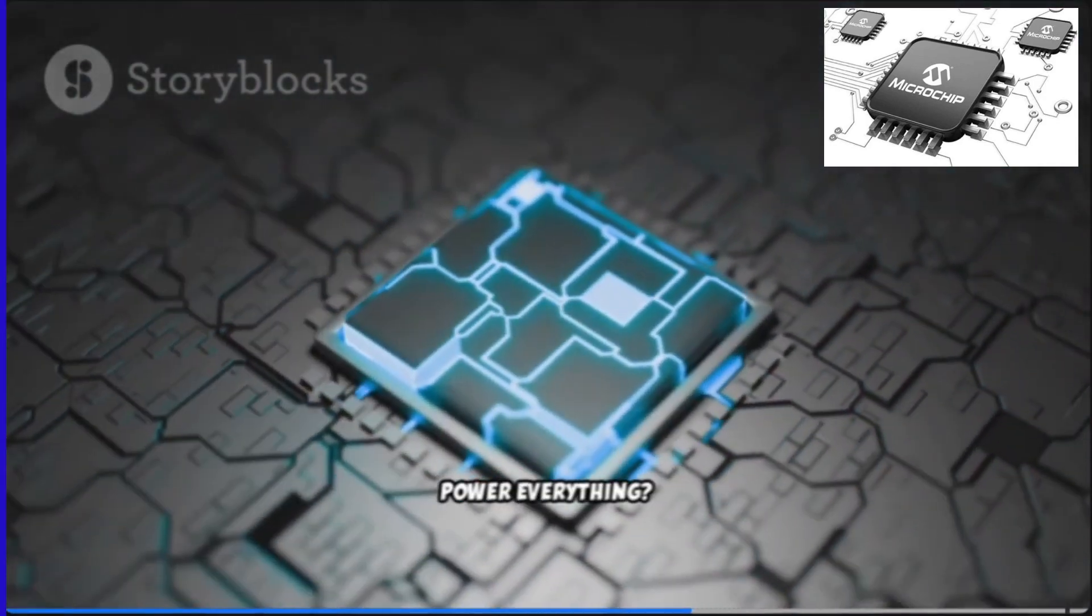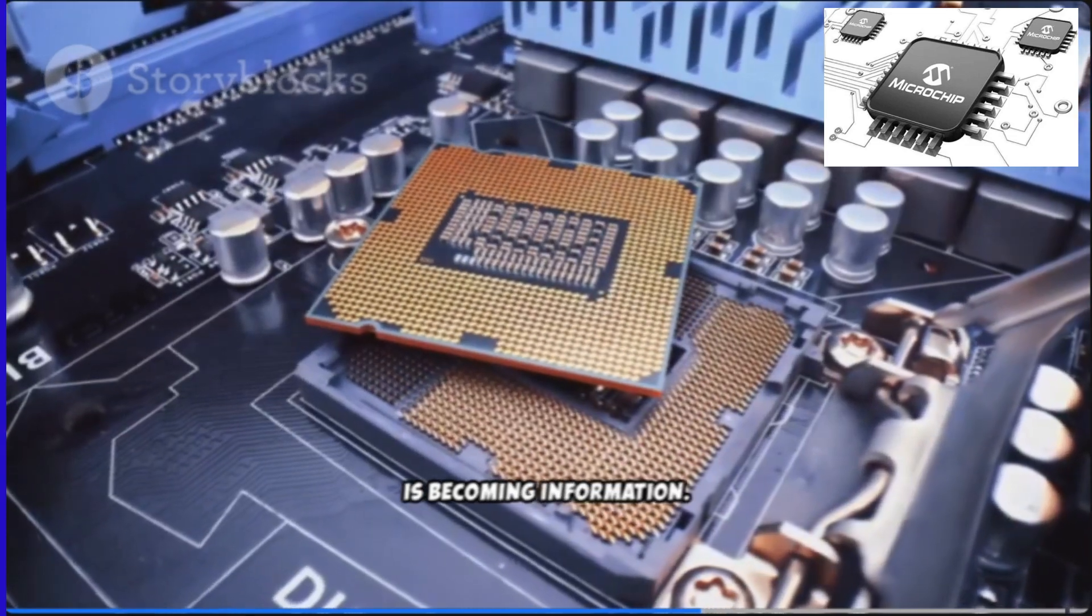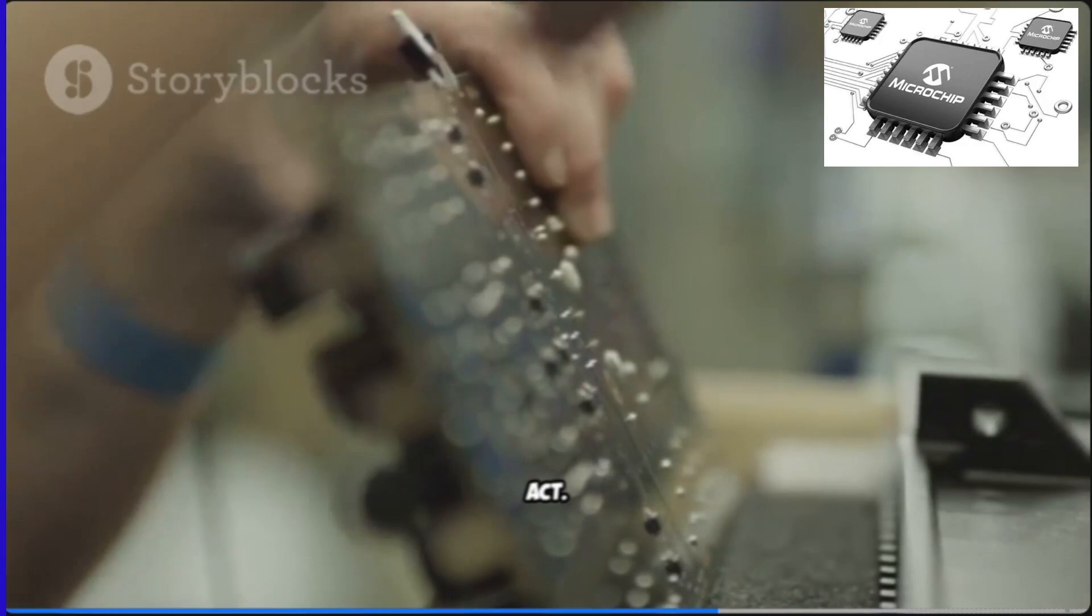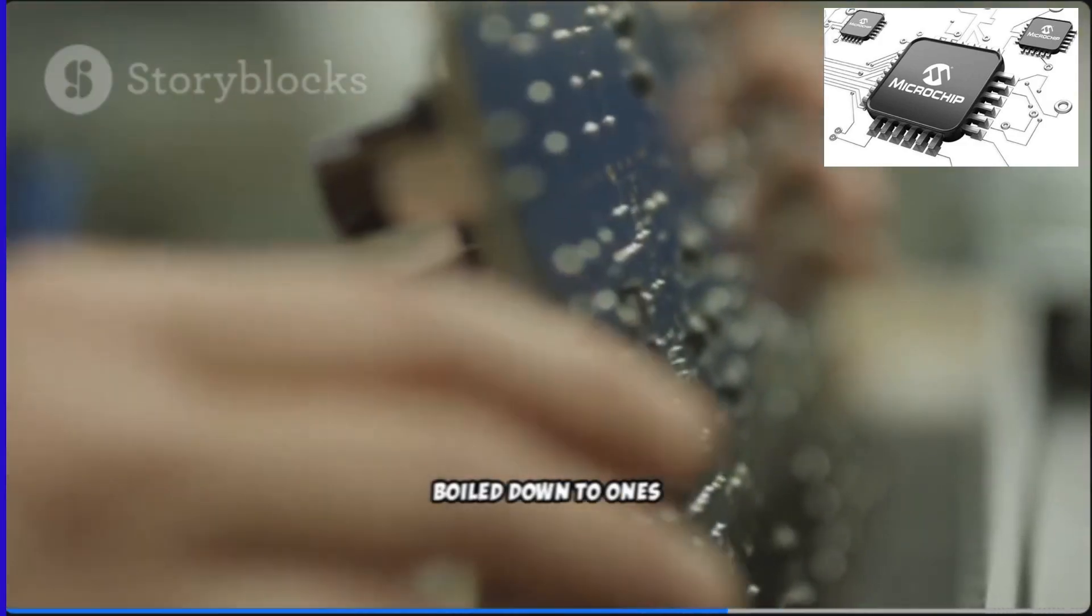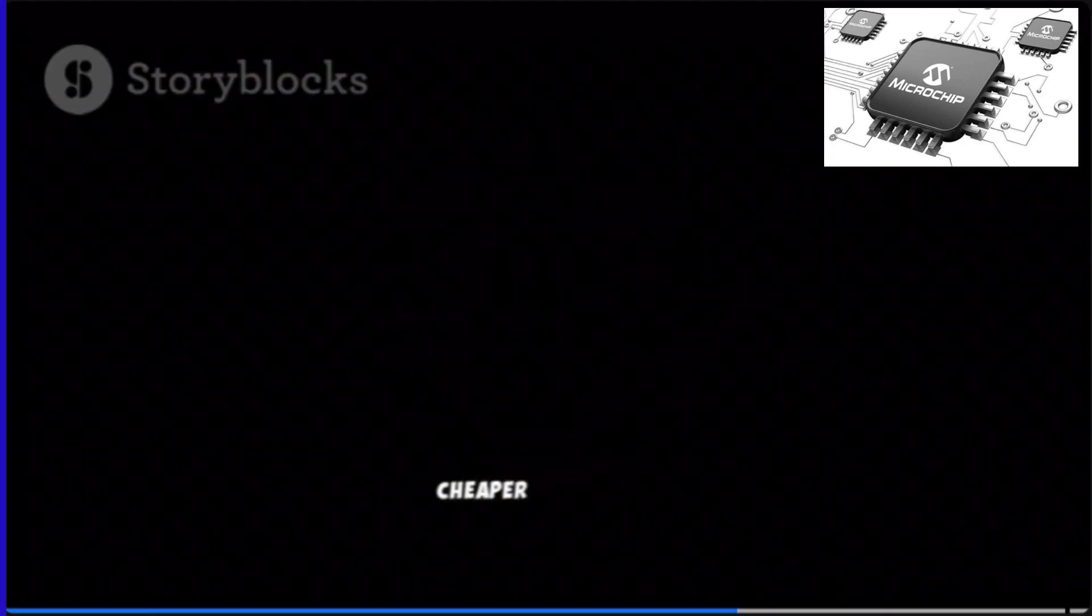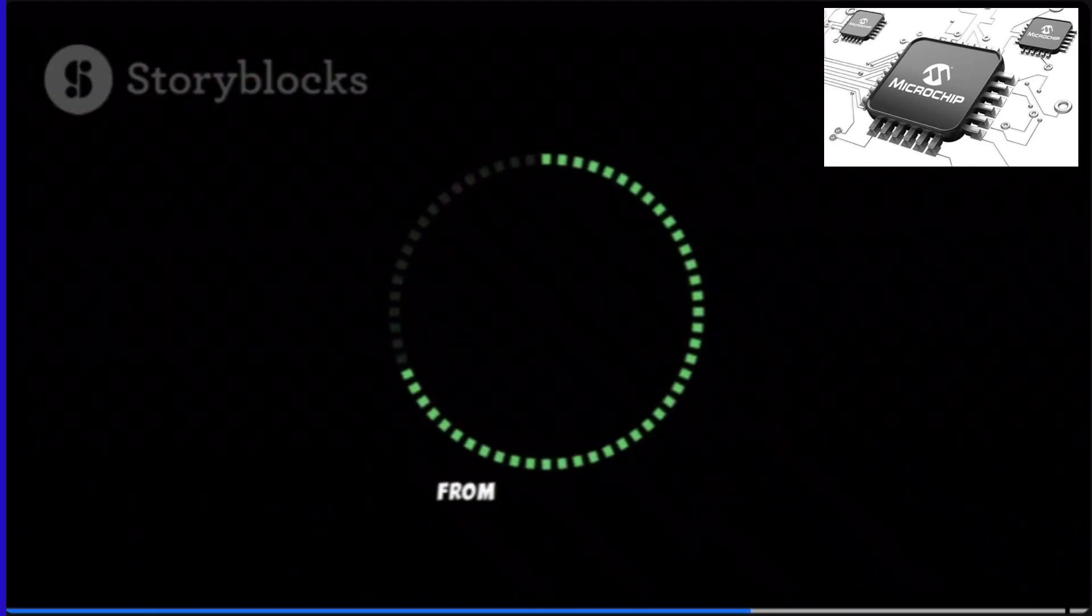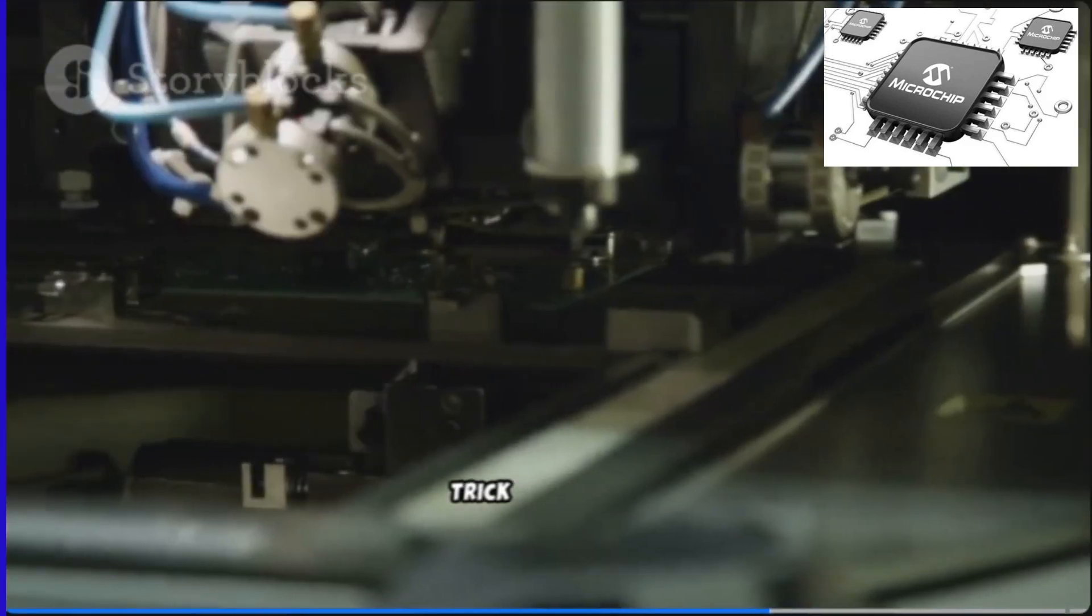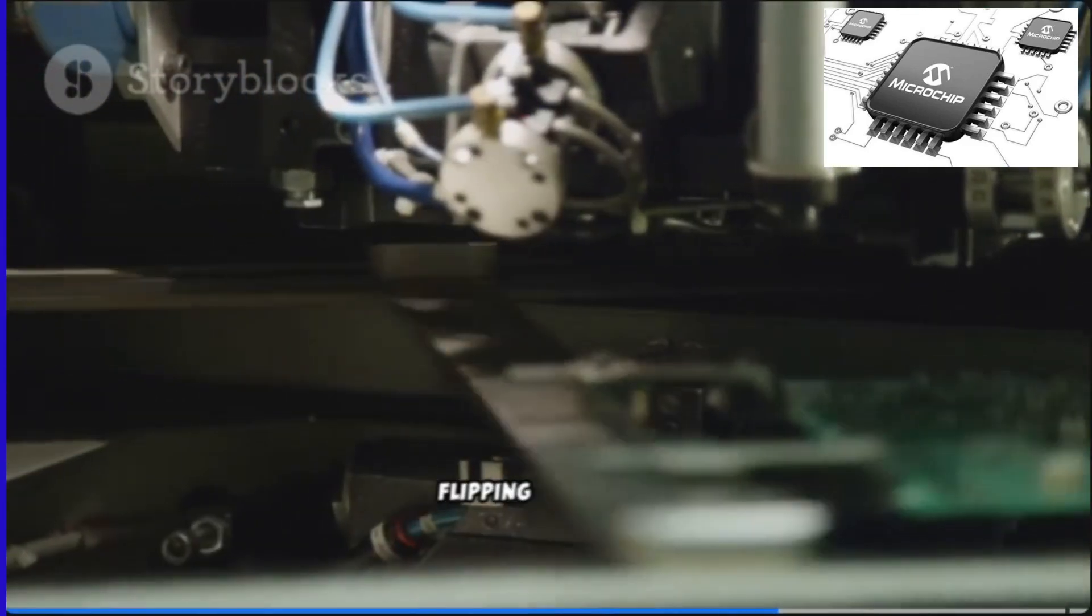So why do chips power everything? Because everything is becoming information. Measure, compute, decide, act. If a task can be boiled down to ones and zeros, a chip can do it. Cheaper every year, smaller every year, smarter every year. From traffic lights to rockets, from earbuds to MRI machines, it's the same trick. Billions of tiny switches flipping in rhythm.